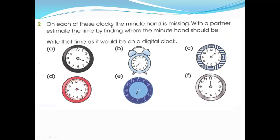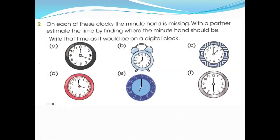With a partner, estimate the time by finding where the minute hand should be. You can place it anywhere you like. Then write that time as you would on a digital clock. So let's draw a hand - I will put it mostly on 12.